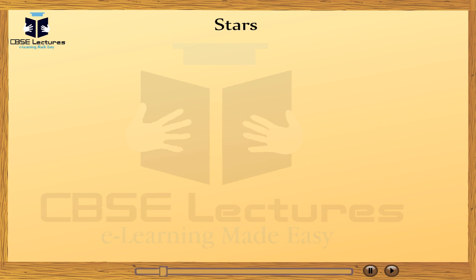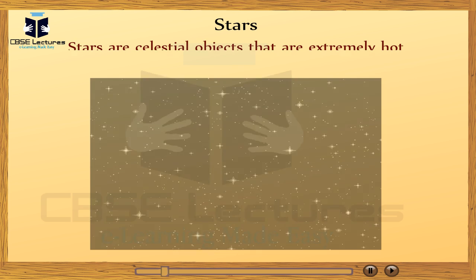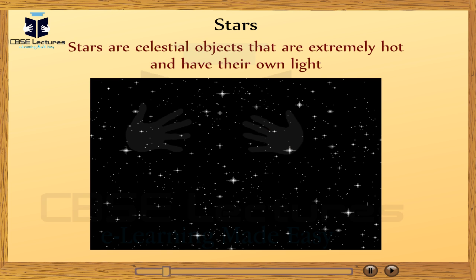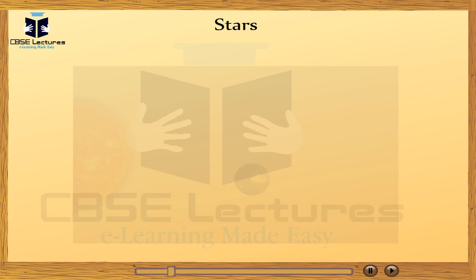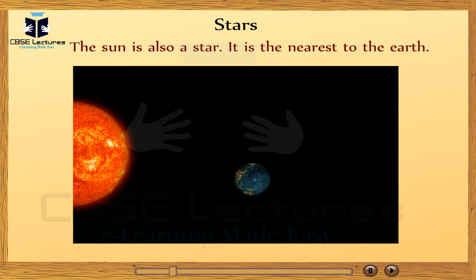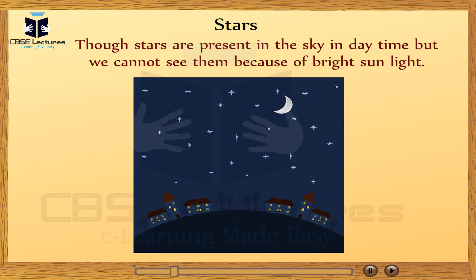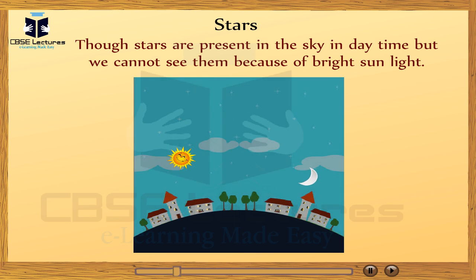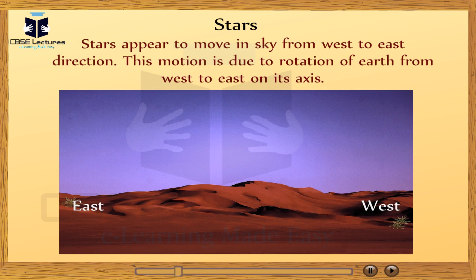Let's start with stars. Stars are celestial objects that are extremely hot and have their own light. Stars are very large — they appear small, but they are very far away. The sun is also a star; it is the nearest star to the Earth. Though stars are present in the sky in daytime, we cannot see them because of bright sunlight. Stars appear to move in the sky from west to east direction. This motion is due to the rotation of Earth from west to east on its axis.